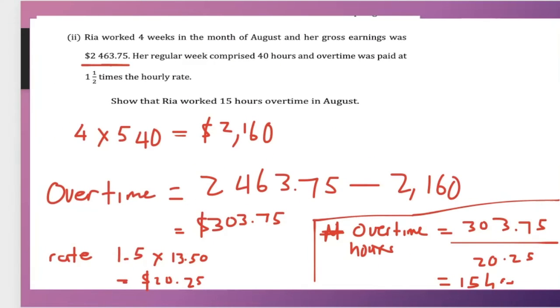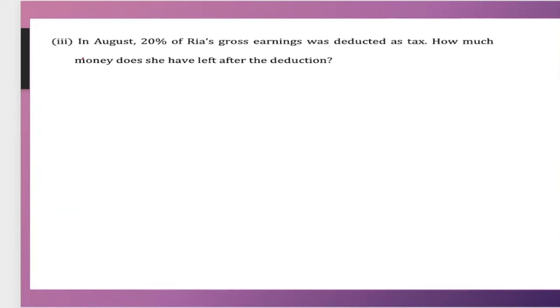Now, the next question states that in August, 20% of Ria's gross earning was deducted as tax. How much money does she have left after deduction? Now, remember,